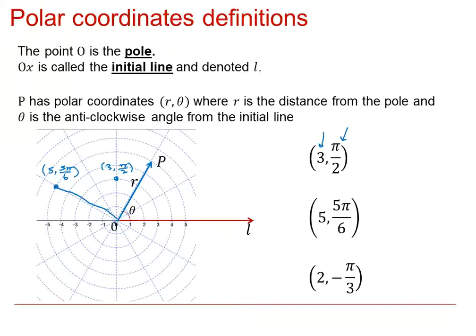If we put the line on, we can see there's the angle, 5 pi by 6, and there's the distance, 5.